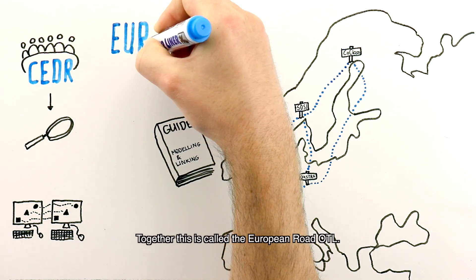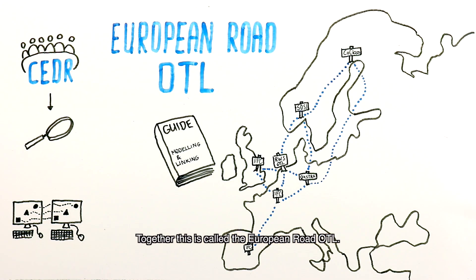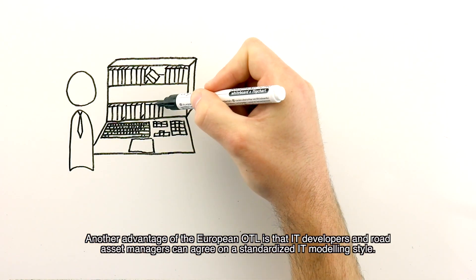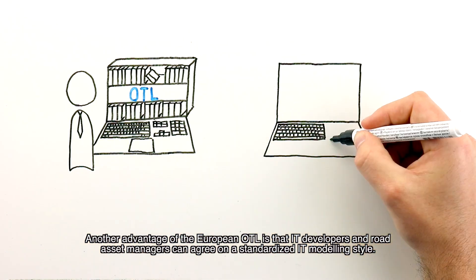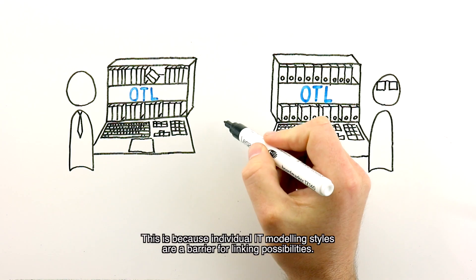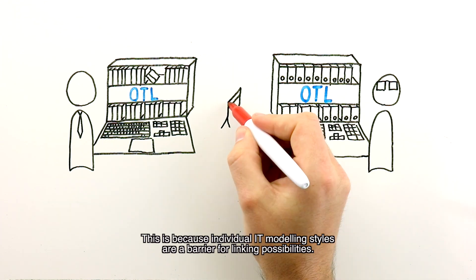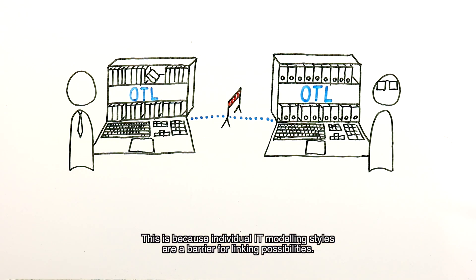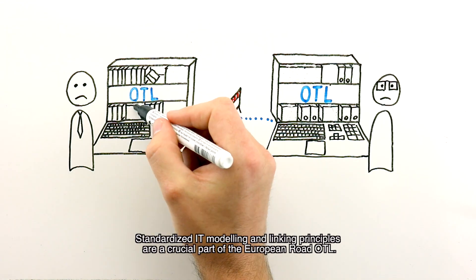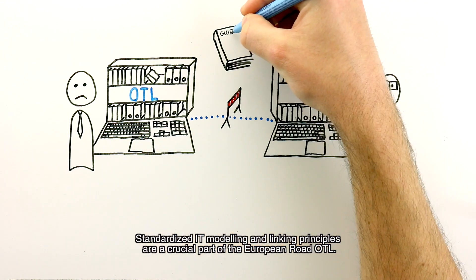Together, this is called the European Road OTL. Another advantage is that IT developers and road asset managers can agree on a standardized IT modeling style. Individual IT modeling styles are a barrier for linking possibilities. Standardized IT modeling and linking principles are a crucial part of the European Road OTL.